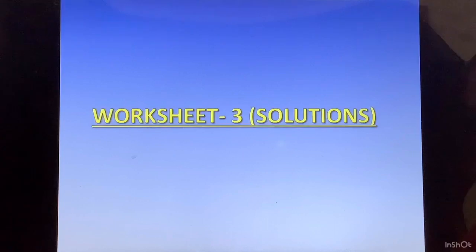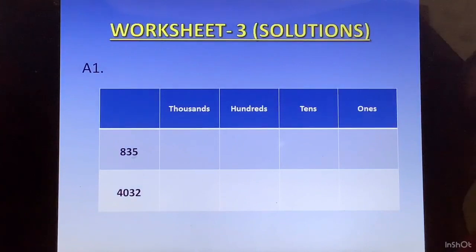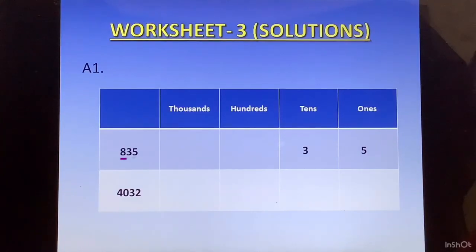Let us look at the solutions of Worksheet 3, which was shared in the previous video. Question 1: Arrange the numerals in the place value table. For the first number, 835, we start with the rightmost digit, 5, and place it in the ones column. Then 3 goes in the tens column, and 8 goes in the hundreds column.